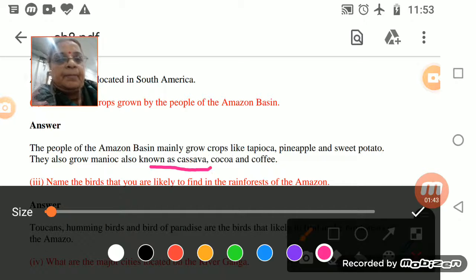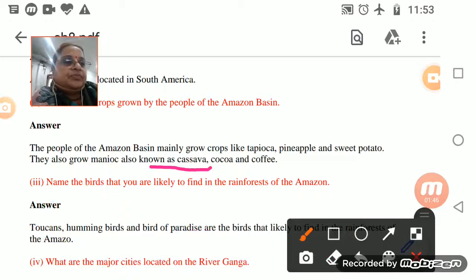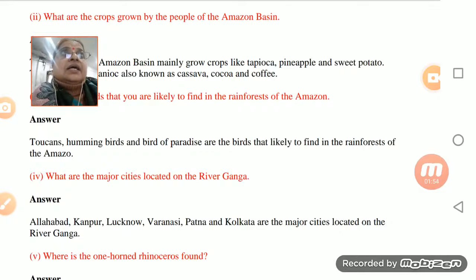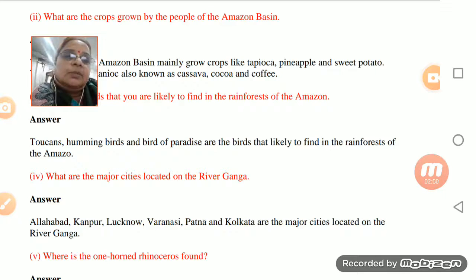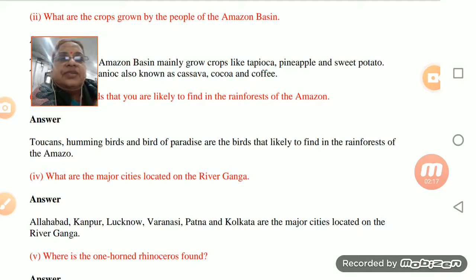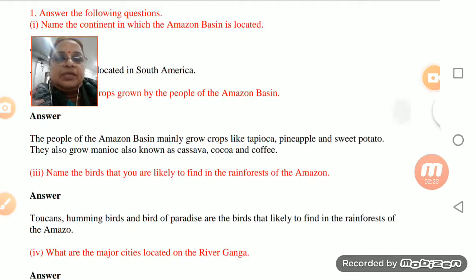You should remember the names of the birds and animals found in the Amazon rainforest. The names are: toucans, hummingbird, and the bird of paradise. These are some of the birds found in the amazing Amazon rainforest.